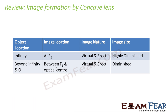A quick review on image formation: when you look at image formation by a concave lens, just like a convex mirror, diminished, virtual, erect images are formed. It is just that if the object is very far away, the image will be all the more diminished. But wherever the object is located, the image will always be smaller in size than the object.